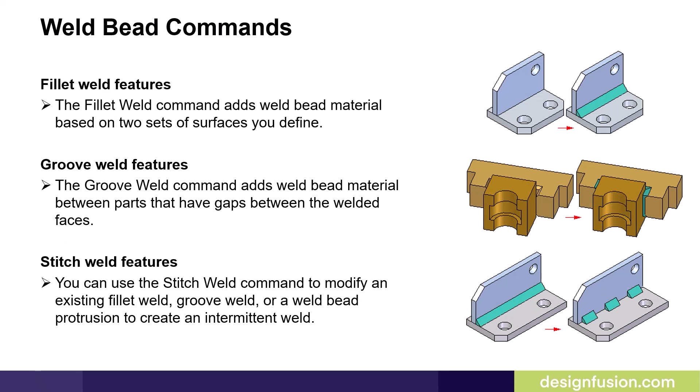The commands on the weld beads group allow you to add weld bead material to the weldment assembly. You can define colors for the weld bead material, which makes it easier to differentiate between weld bead material and the parts in the assembly. You can construct fillet welds, groove welds, and stitch welds, which are illustrated on this slide. You can also construct material addition features that represent weld bead material using protrusions, revolved protrusions, and swept protrusions.